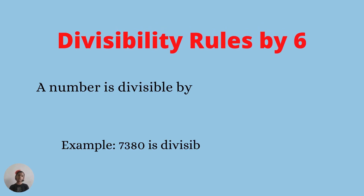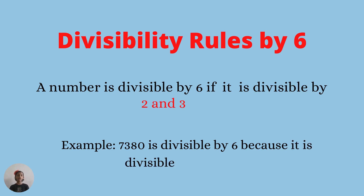Divisibility rule of six: a number is divisible by six if it is divisible by both two and three. Example: seven thousand three hundred and eighty is divisible by six because it is divisible by two and three both.